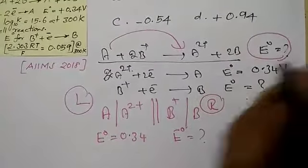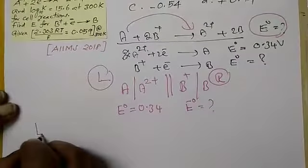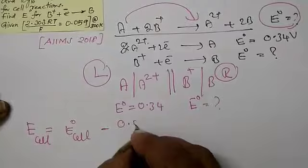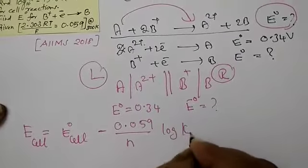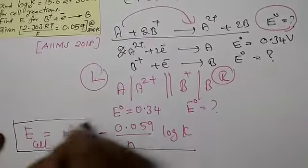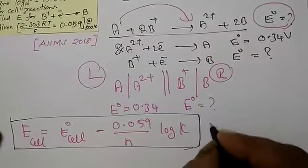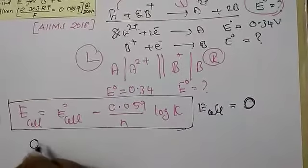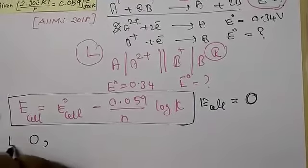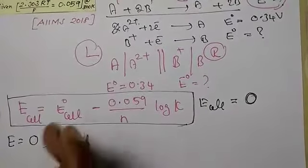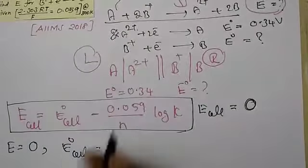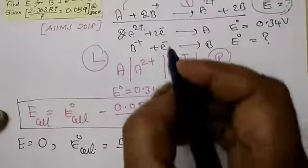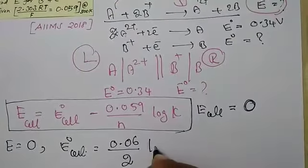The approach is: first you have to calculate using the Nernst equation formula. What is the Nernst equation formula? E_cell = E°_cell − (0.059 / N) × log K. Now the first piece of information is the Nernst equation is ready. Since the condition is at equilibrium, E_cell = 0. Since E = 0, I can write: E°_cell = (0.059 / N) × log K. How many electrons are involved? N = 2. So you can write 2 here, and log K.